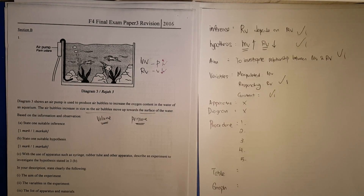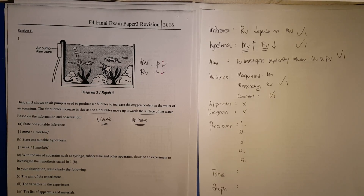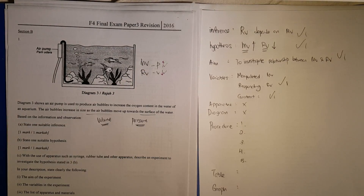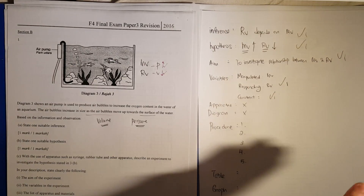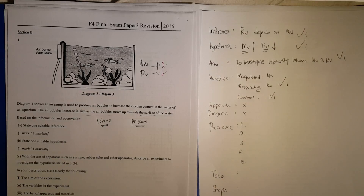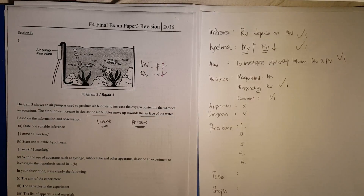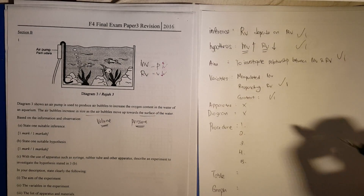When you look at a Paper 3 design experiment, don't be too concerned or worried about whether you've done or studied the experiment before. Write down your variables, think them through, and then write your inference, hypothesis, aim, and variables — and you get five marks. Since you may not know how to do the experiment, you will still get these five marks.